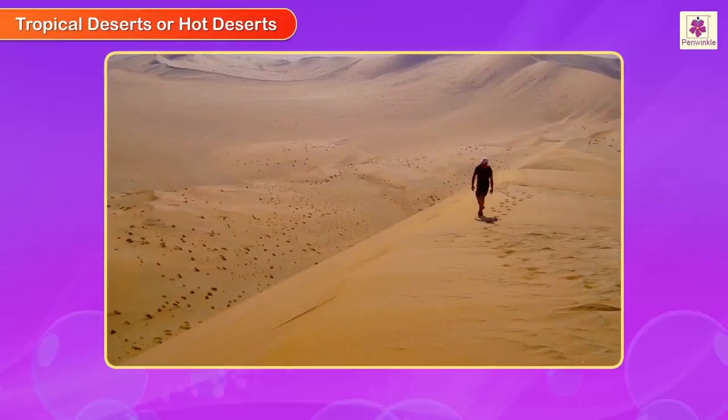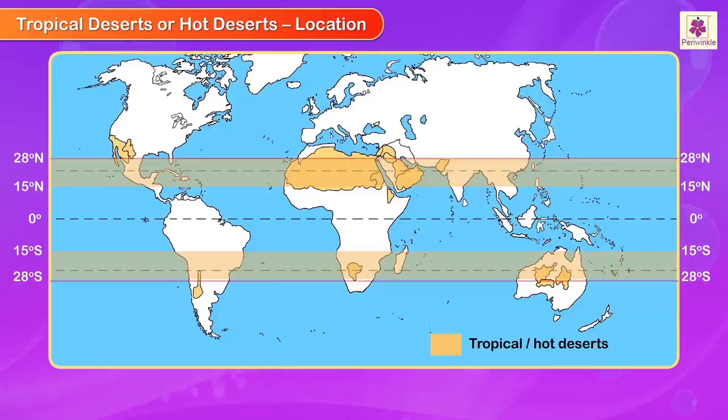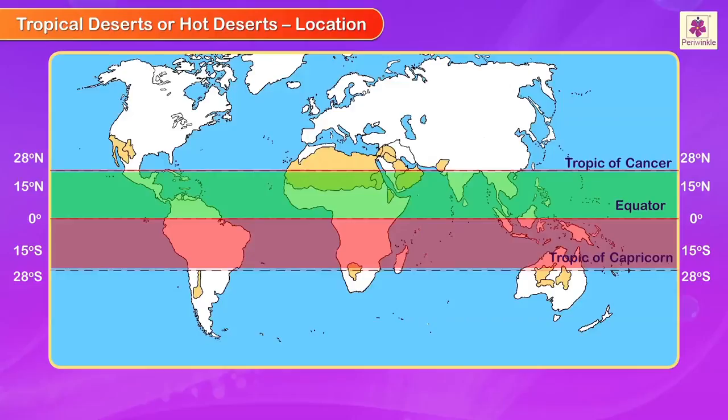Tropical deserts, i.e. hot deserts. Location: Hot deserts are located between the latitudes 15 degrees to 28 degrees north and south. They lie in the regions between the equator and the Tropic of Cancer in the northern hemisphere, and between the equator and the Tropic of Capricorn in the southern hemisphere.